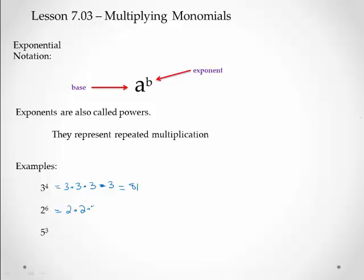2 to the 6th gives me 2 times 2 is 4 times 2 is 8 times 2 is 16 times 2 is 32 times 2 is 64. And then 5 to the 3rd is three 5's, so 5 times 5 is 25 times 5 is 125. So this is what we're talking about when we're doing exponents.